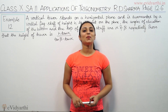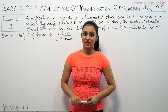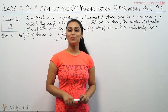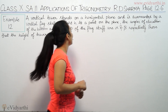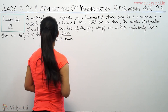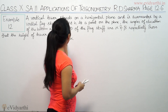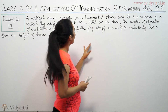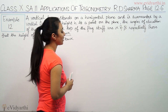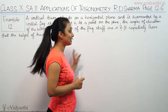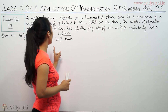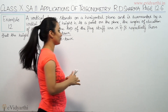Hi, this is Khushbu with another question on applications of trigonometry. This is example number 12 from page 12.6 of Adi Sharma. A vertical tower stands on a horizontal plane and is surmounted by a vertical flagstaff of height h. At a point on the plane, the angle of elevation of the bottom and top of the flagstaff are alpha and beta respectively. Prove that the height of the tower is h·tan α / (tan β − tan α).